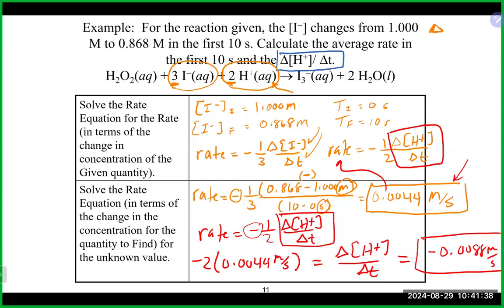H⁺ is changing at −0.0088 M/s versus the overall rate of 0.0044 M/s — it's changing twice as fast. That's because of the stoichiometry: H⁺ has a coefficient of 2. This is why we have to take stoichiometry into account. If you wanted, you could figure out how every other species in that reaction is changing with time using the same approach.